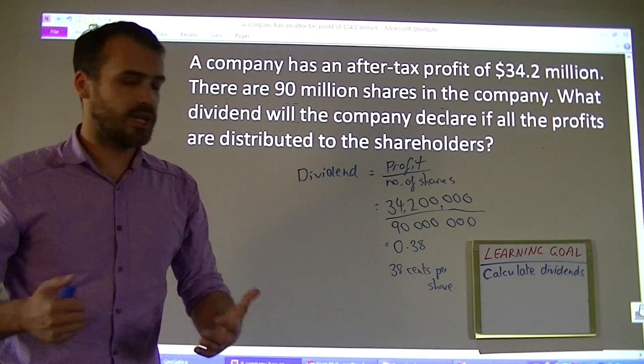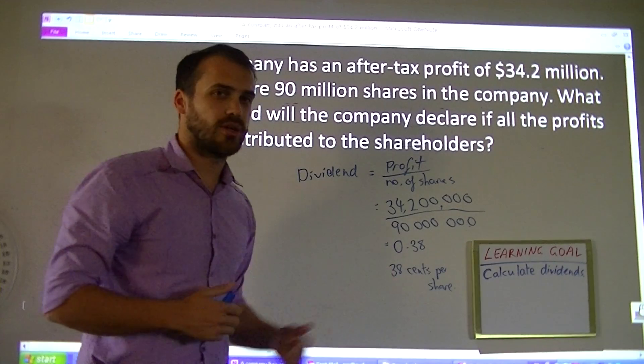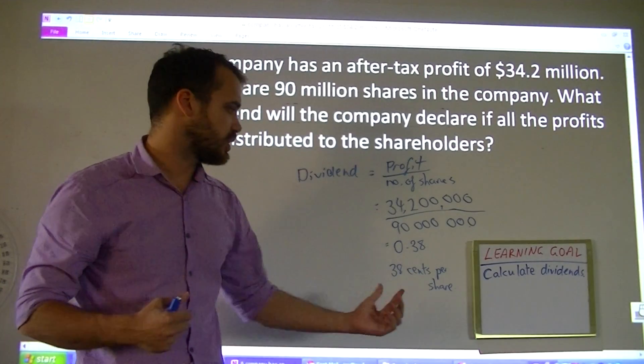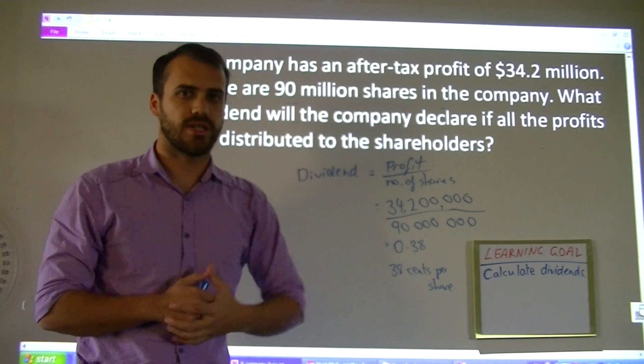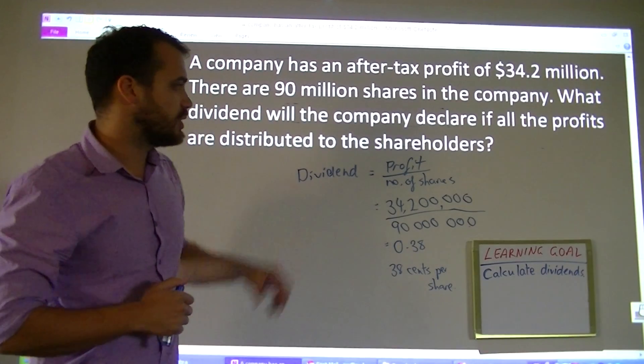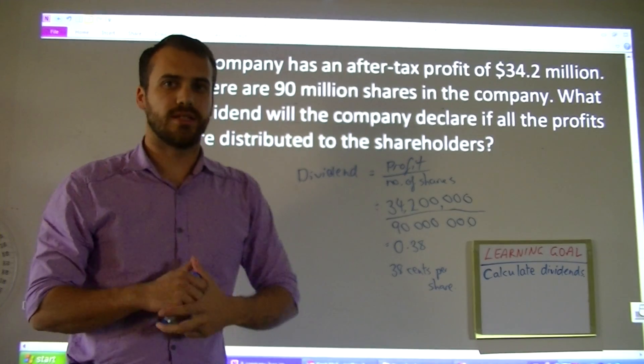So if you own 100 shares, you'll get 100 times 38 cents. If you own 1,000, you'll get 1,000 times 38 cents. That's calculating dividends.